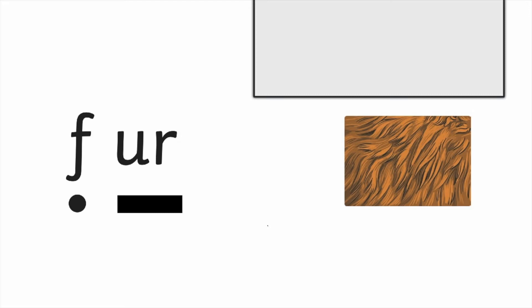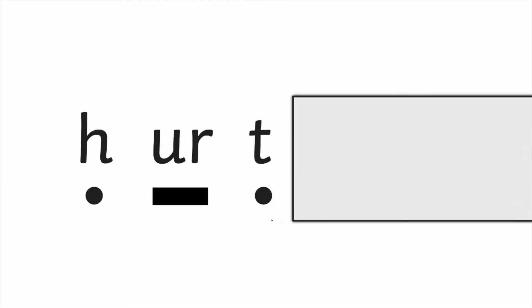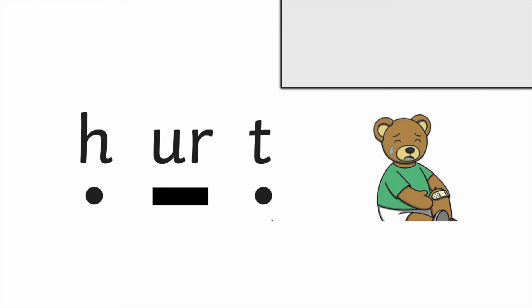Let's see if we can do that with another word. This one's a little bit longer - it has three graphemes. You blend it and shout it at the screen. Brilliant work, everyone - hurt! Let's blend it together just to double check: H - ur - T. Hurt. Oh look, poor little bear - it hurt his knee. Hurt.